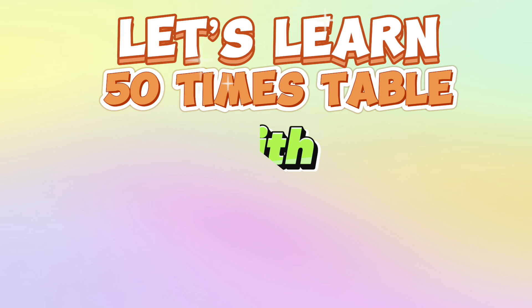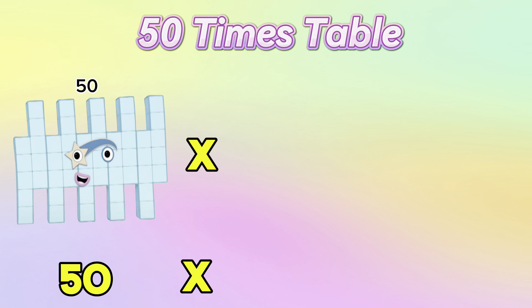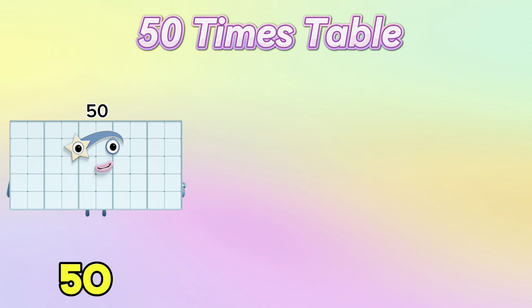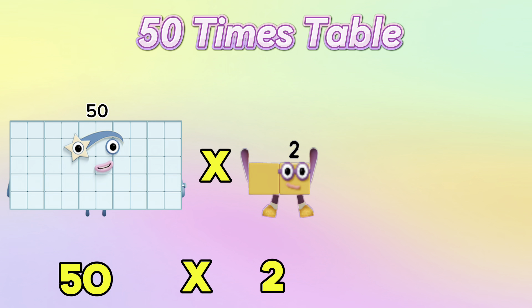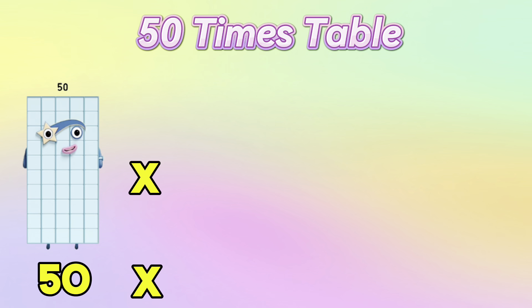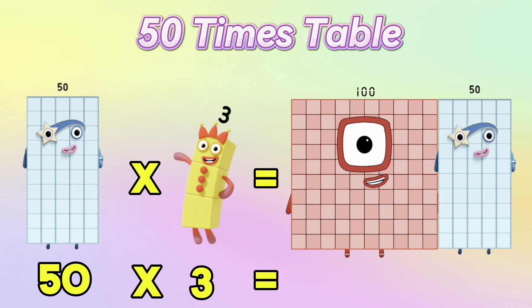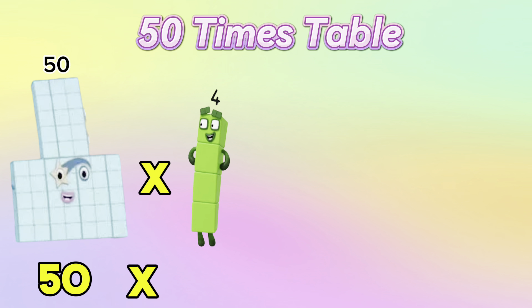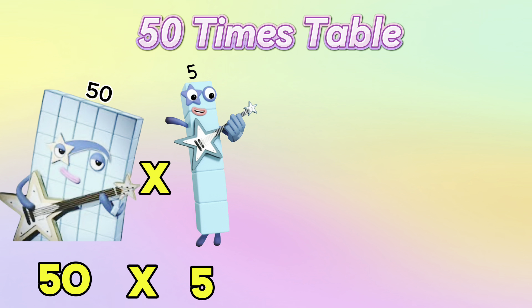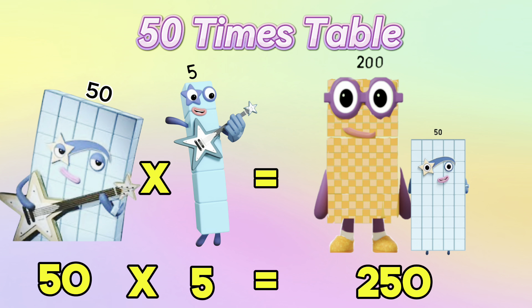Hi guys, today let's learn the 50 times table with number blocks. Let's begin. 50 multiplied by 1 is equal to 50. 50 multiplied by 2 is equal to 100. 50 multiplied by 3 is equal to 150. 50 multiplied by 4 is equal to 200. 50 multiplied by 5 is equal to 250.